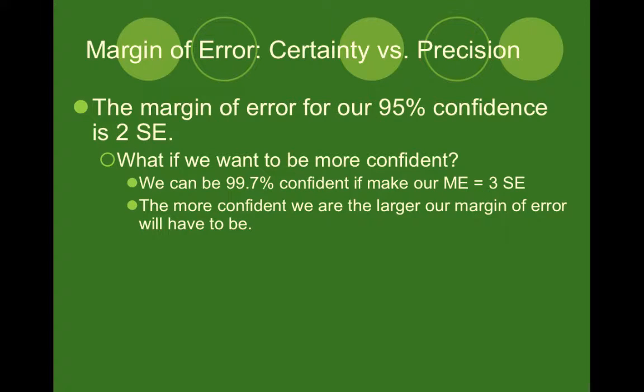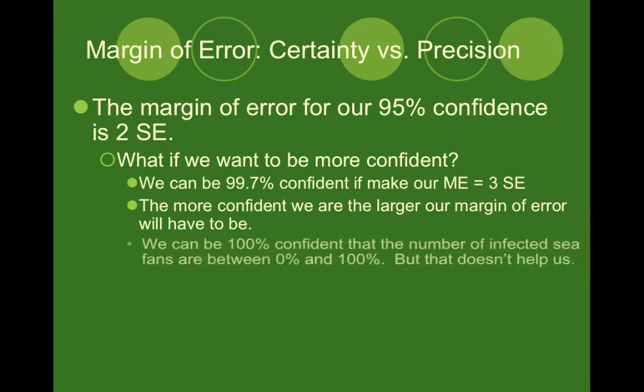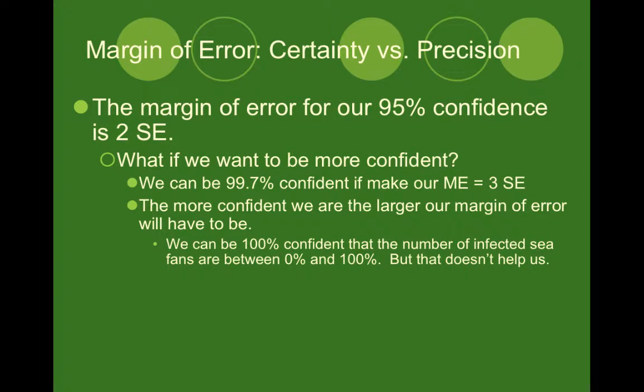The more confident we are, the larger our margin of error is going to have to be, and therefore the wider our interval will be. We could be 100% confident, but the only way we can be 100% confident is if we say that some percentage of CFANS are infected — so by saying it's between 0% and 100%, we can be 100% confident. But that doesn't help us; that's not very precise.